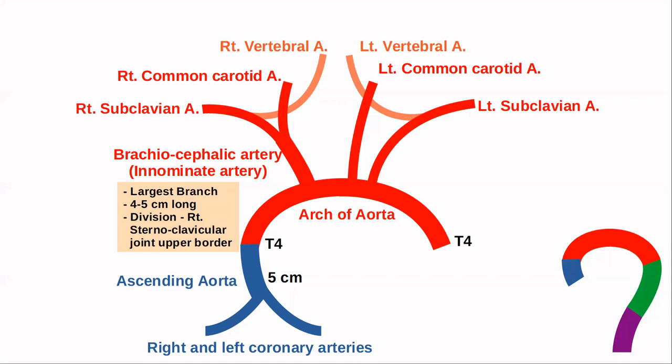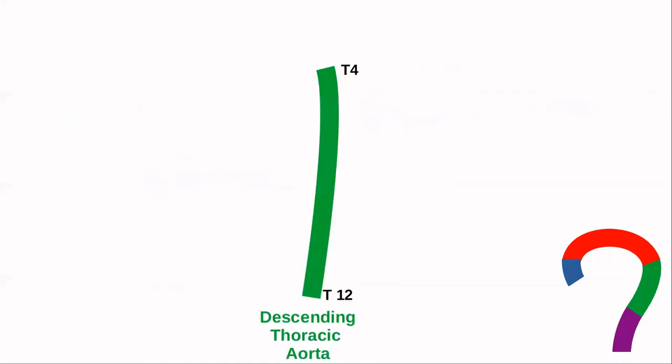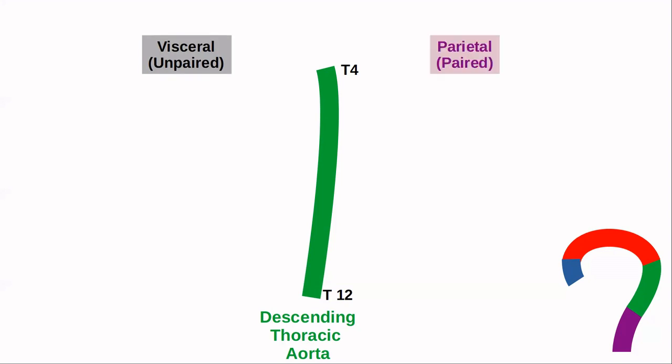The ascending aorta is the first part, giving rise to two branches. The arch of aorta is the second part, giving rise to three branches. The descending thoracic aorta goes from T4 to T12 and has two types of arteries — those supplying the viscera, which are unpaired, and those supplying the parietes, which are paired.